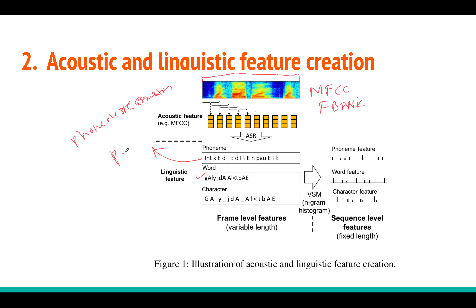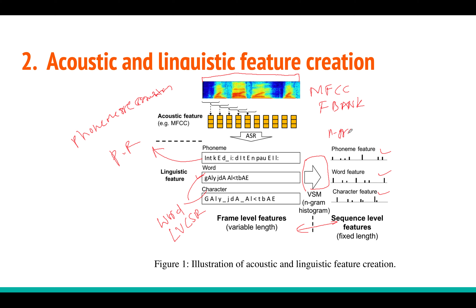We take features from a phoneme recognition (PR) system and from a word-based LVCSR system. From the words you can decompose to get characters. These phoneme and word transcripts go as input to a VSM block — a feature extraction model that takes these sequences and produces phoneme, word, and character feature vectors. These features are created using n-gram statistics.